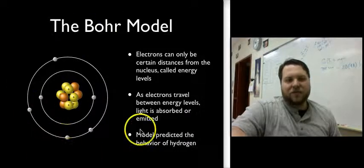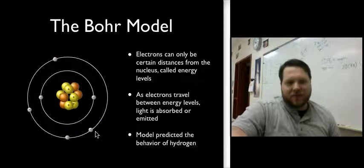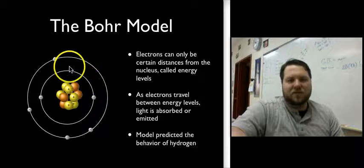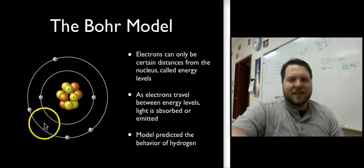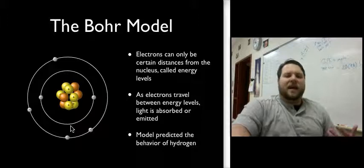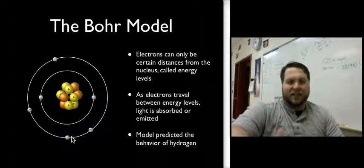Rather than have them circle the nucleus in random paths, Bohr said that the electrons will circle the nucleus at certain distances. And he called these distances energy levels, which makes sense, because electrons a certain distance away from the nucleus will have a characteristic amount of energy.